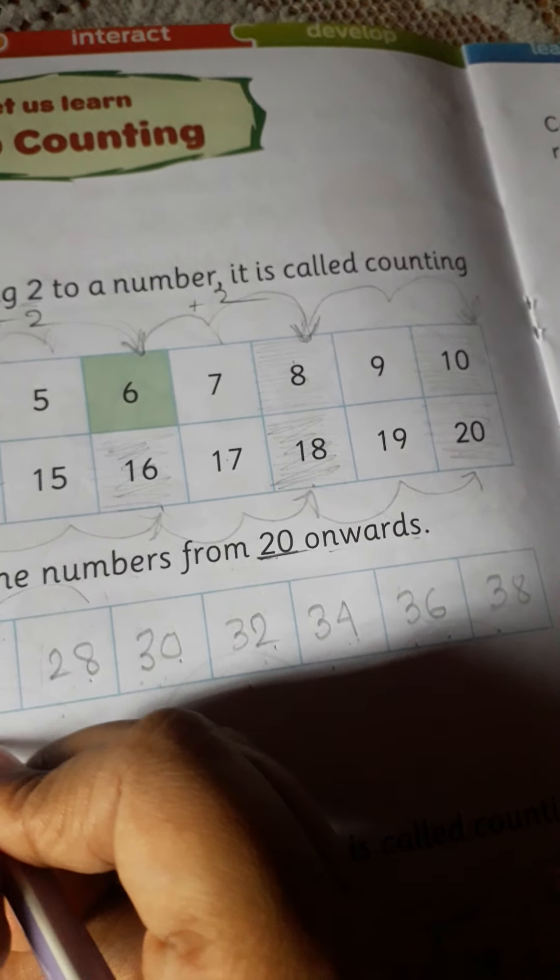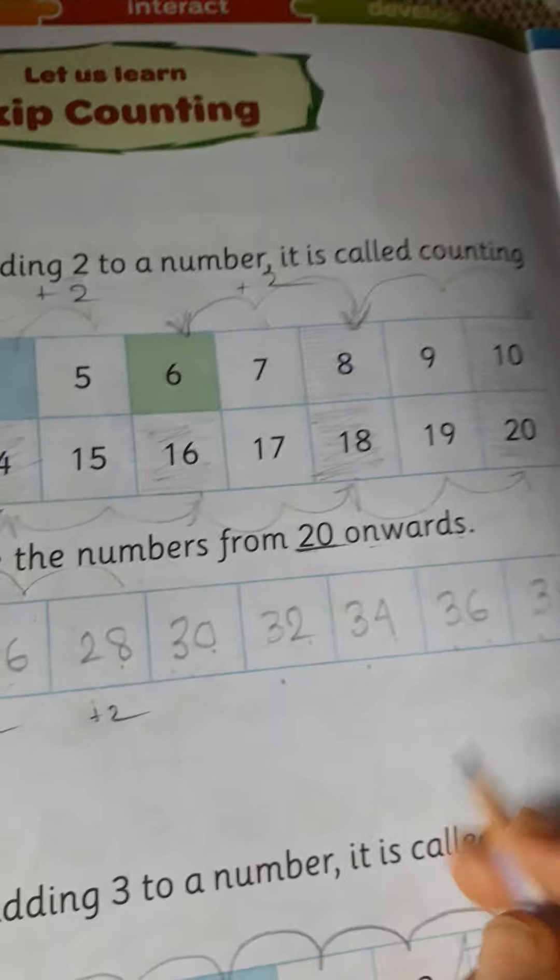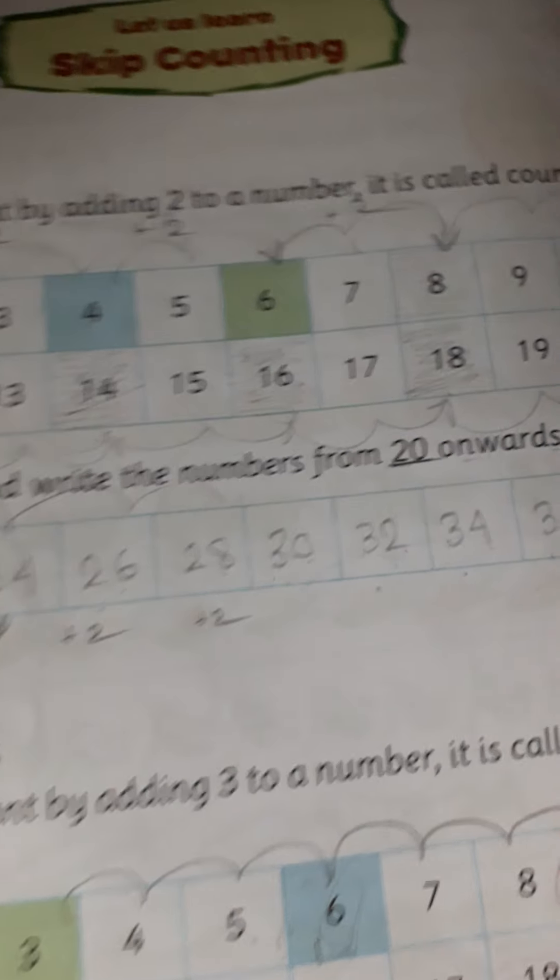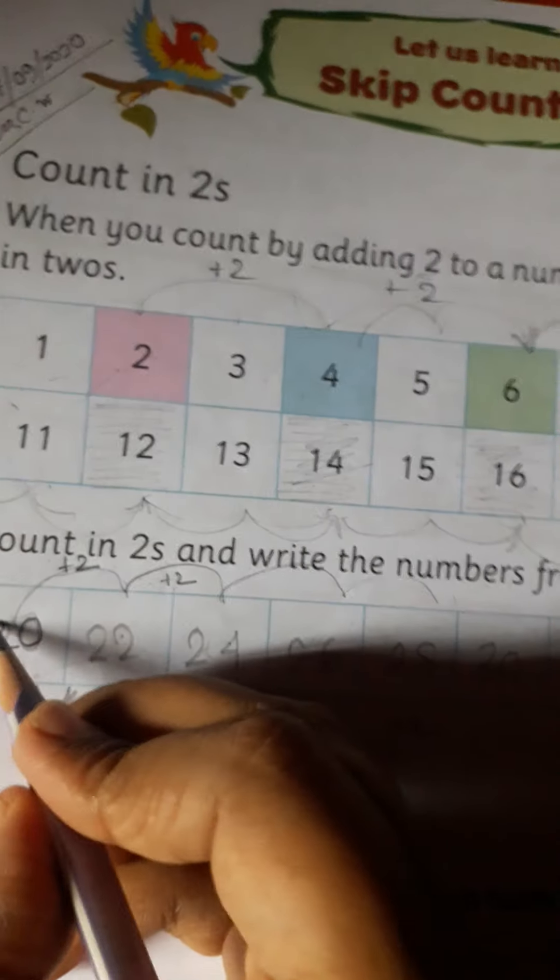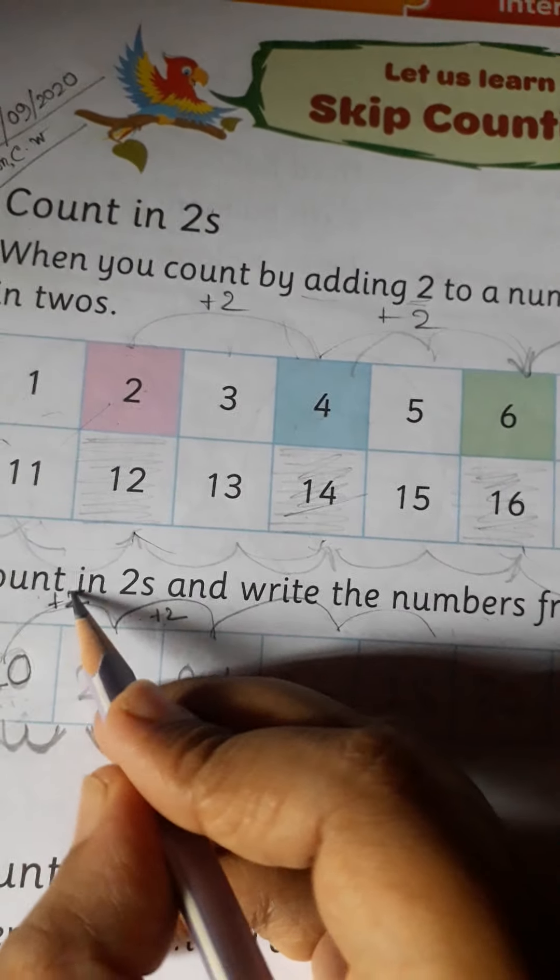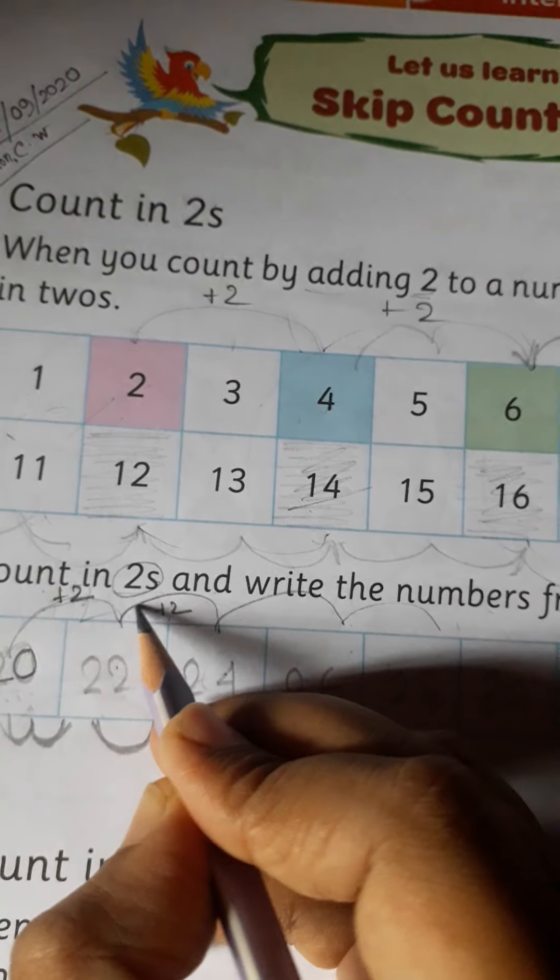Now what we have done? 2, 1, 2, 1, 2, 1. Okay. Now what we have done? 50 onwards, then we start to 50 in 2s.